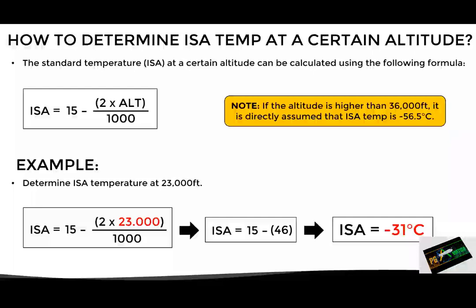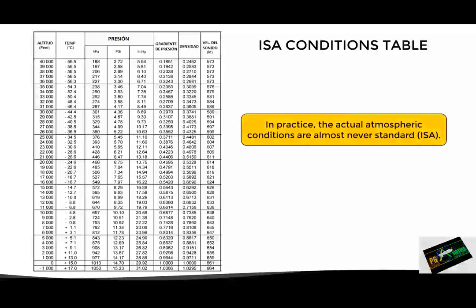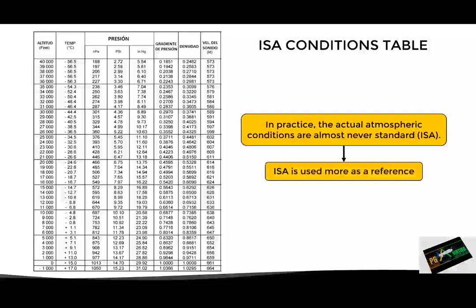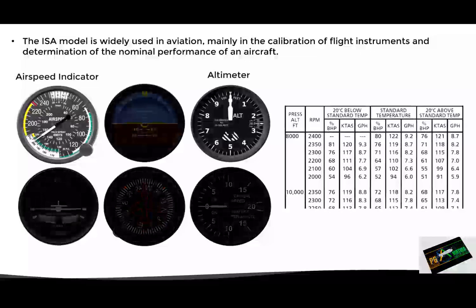It is important to note that all the values we are calculating are approximate, since the actual and exact values are published in the table found in ICAO Document 7488. Another consideration is that in practice the actual atmospheric conditions are almost never standard, so the ISA model is more used as a reference rather than to represent the average conditions of the atmosphere. With this in mind, the ISA model is widely used in aviation, mainly for instrument calibration and determining the nominal performance of an aircraft.